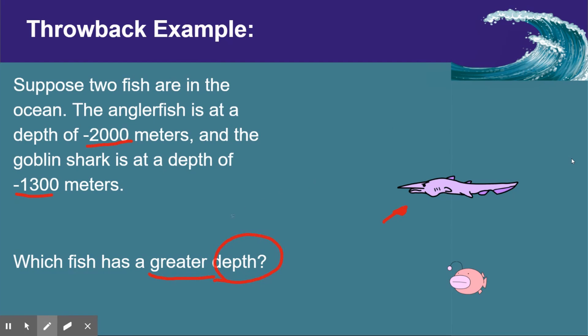But since we have the word depth here, that's usually going to mean that it is the distance from the sea level. So if we think about a number line going this way, we clearly can see that the angler fish is further away from sea level, which would be zero. And what we can use to express that are absolute values.